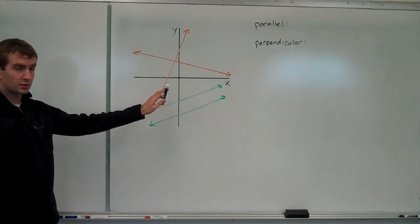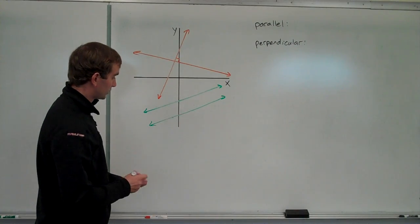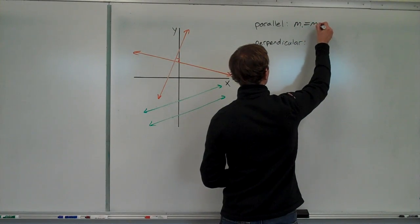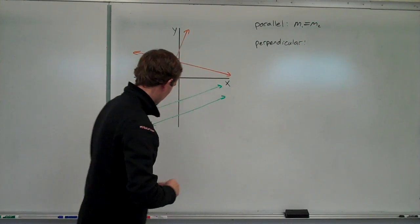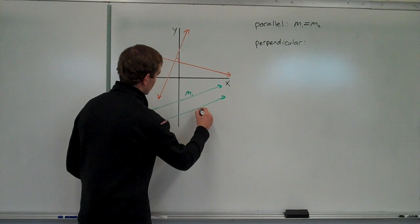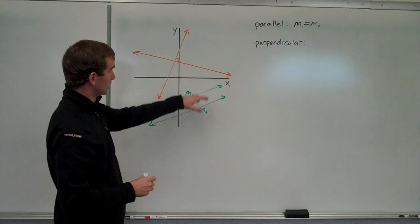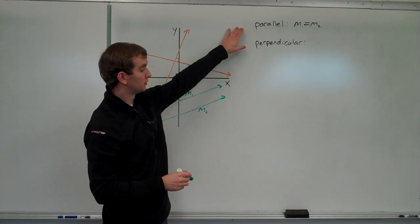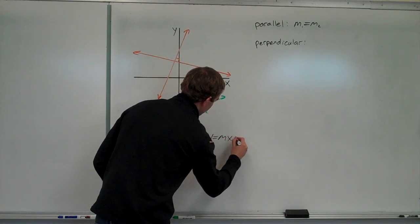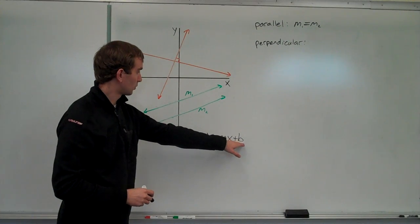The condition for whether two lines are parallel in the coordinate plane is that the two slopes of the lines have to be equal. We'll call this M1 equals M2. If I have my two lines here, this one may have a slope of M1 and this one has a slope of M2, and if M1 equals M2, those two lines are parallel. Remember our equation of a line: Y equals MX plus B, where M is our slope and B is our Y-intercept.